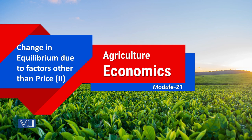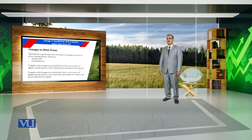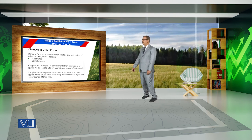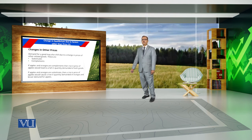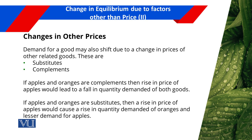Module 21: Change in equilibrium due to factors other than price. Consumer equilibrium also changes whenever there is a change in prices, or whenever there is a change in factors other than the price of that particular commodity. Because of that change in equilibrium due to factors other than price, there is also a change in demand for that particular commodity.